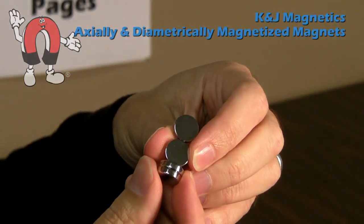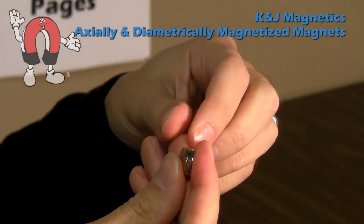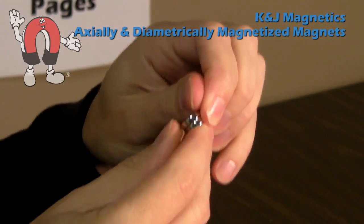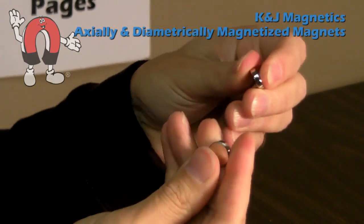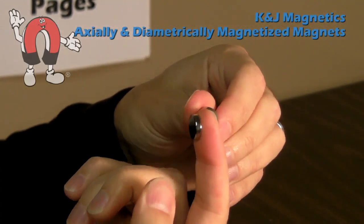Here we show the same sort of thing with disc magnets. These are D82 and D82 DIA magnets. First, the axially magnetized discs. They tend to attract pole to pole, flat side to flat side.